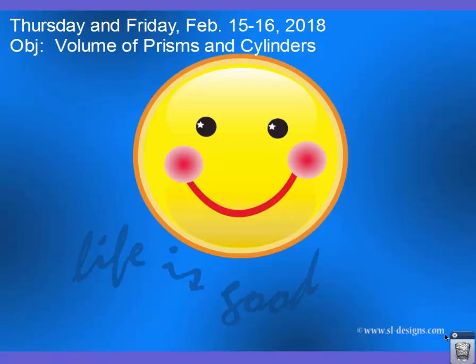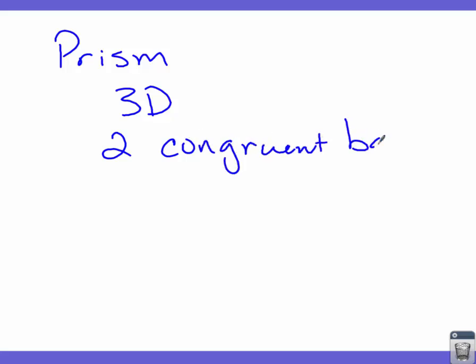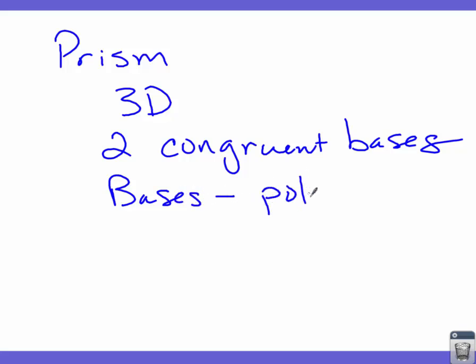Hello class. Today we're going to talk about finding volume of prisms and cylinders. Let's first talk about what a prism is. A prism is a 3D object that has two congruent bases, and the bases must be polygons.